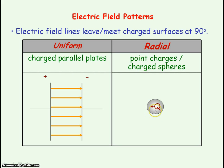Because we've got a positive charge here, the field lines will be leaving from the surface from the charge, and they're leaving at 90 degrees, so it will form a radial electric field pattern.